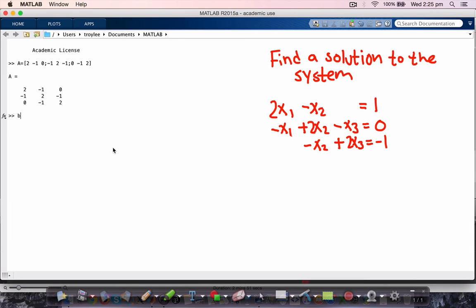And I'm going to make a column vector holding the right-hand side here. So that's 1, 0, minus 1. And now to find a solution to this system X, I can let X be A backslash B.